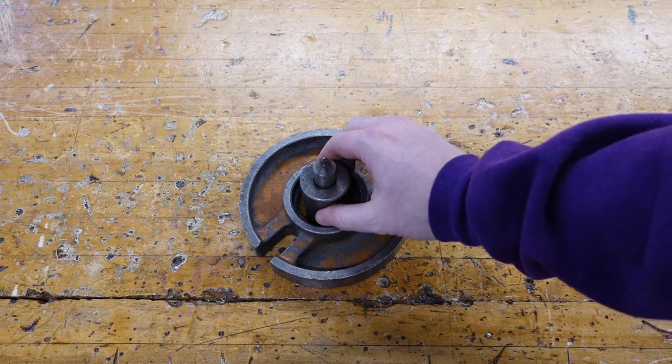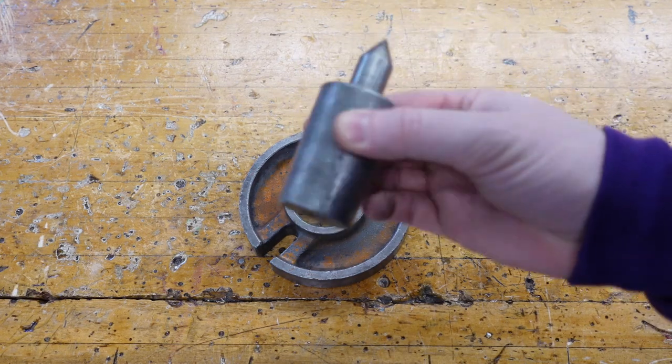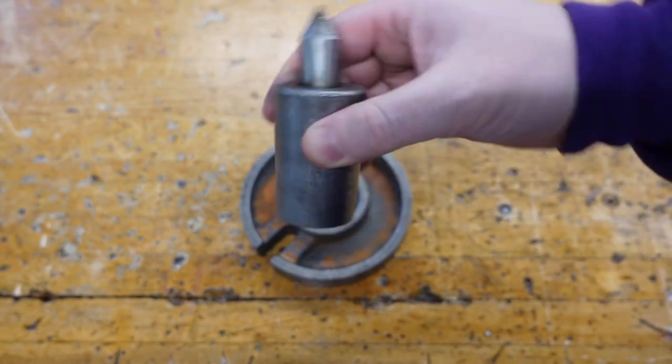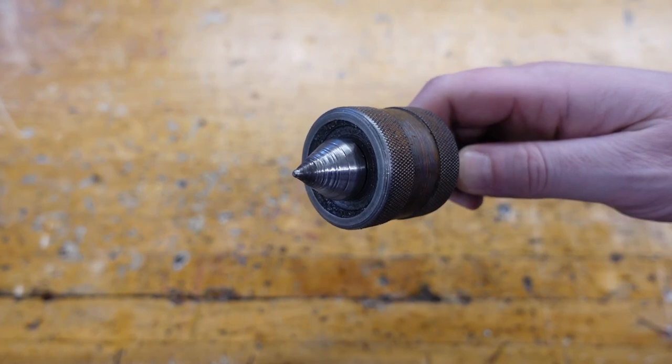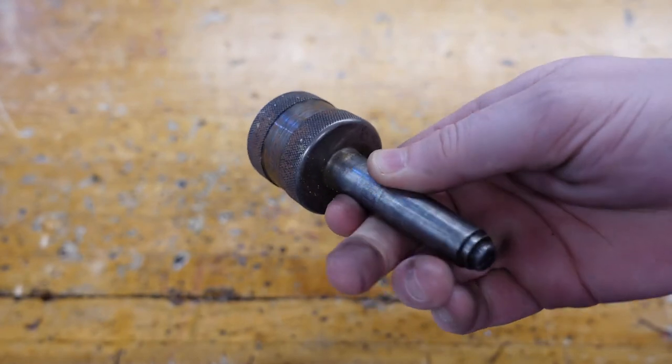On the tail stock you need to install a dead center. It is called this because it's only powered by the project turning itself.